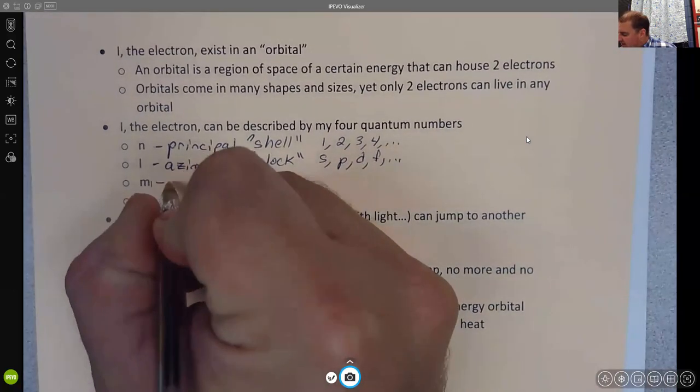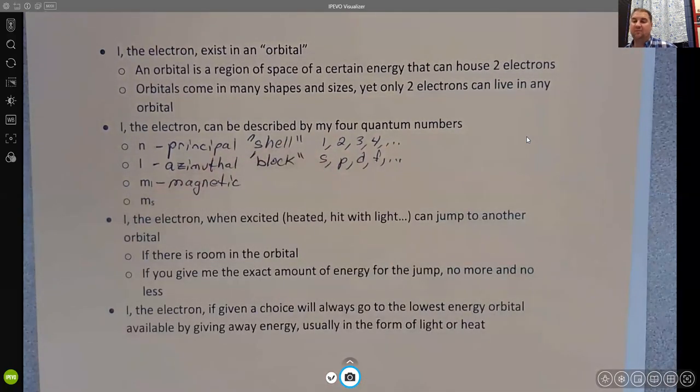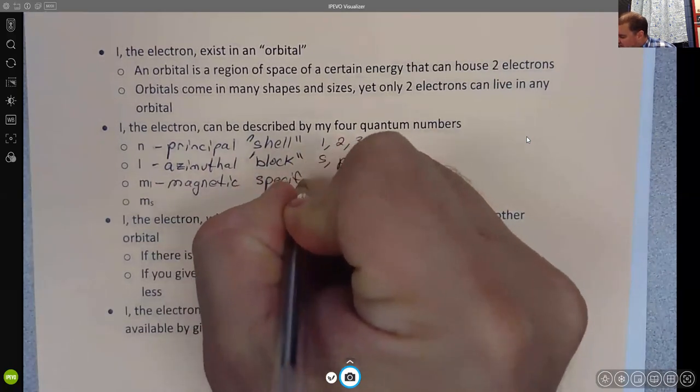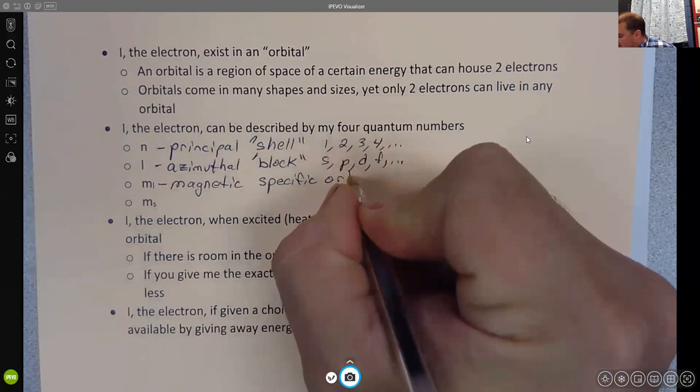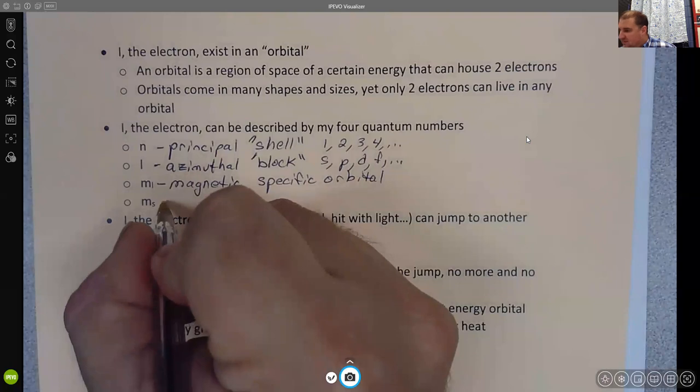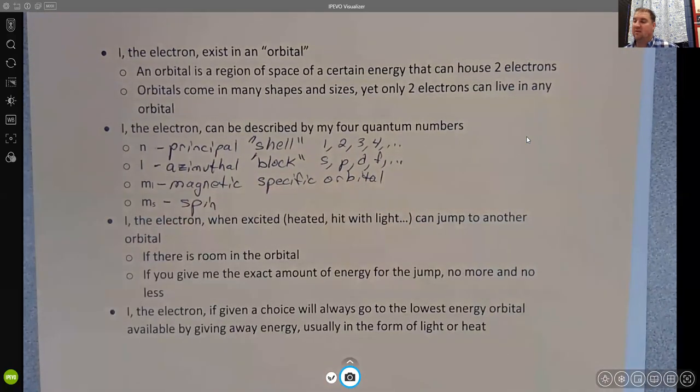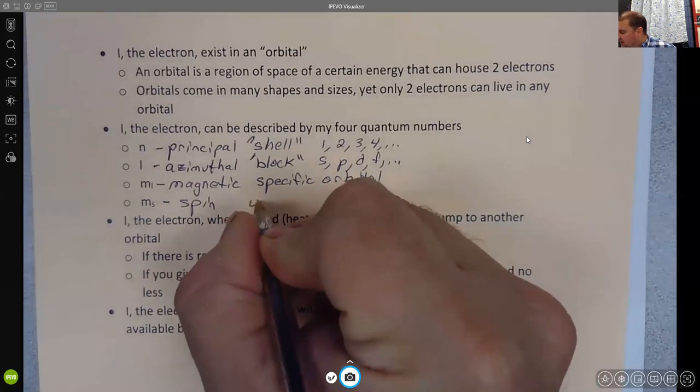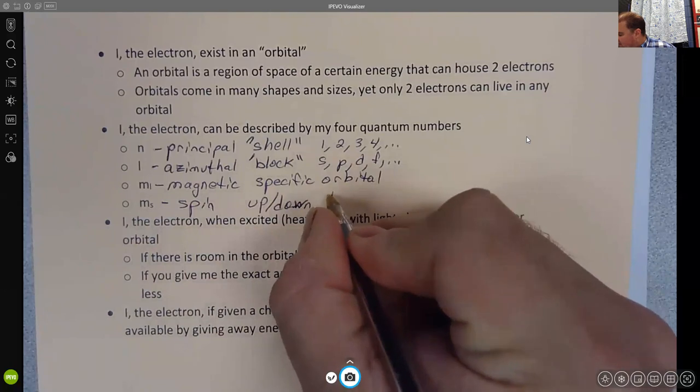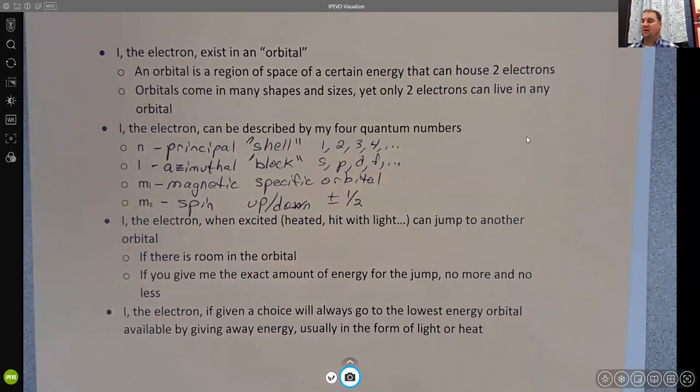And the m sub l is the magnetic quantum number. This is going to be the specific orbital. In other words, like which blank those electrons are in. And then m sub s is the spin quantum number. This is either up or down. And it can have values of plus or minus one half. We'll come back to those.